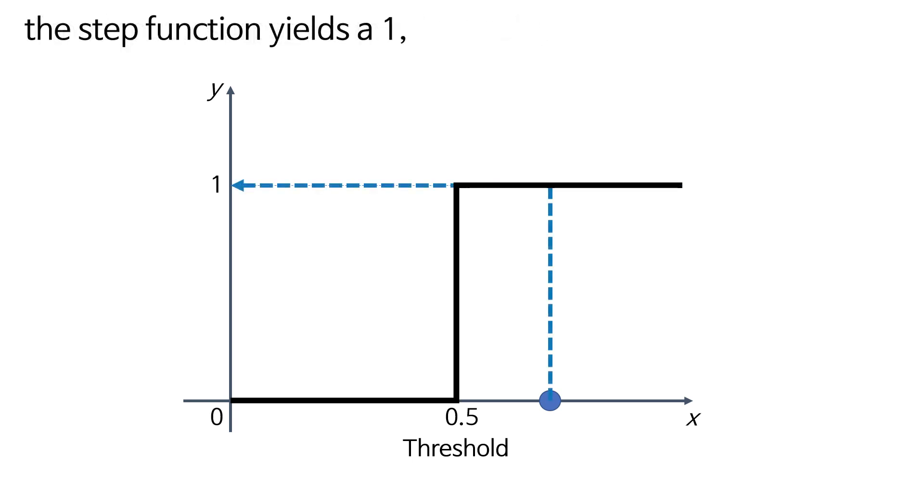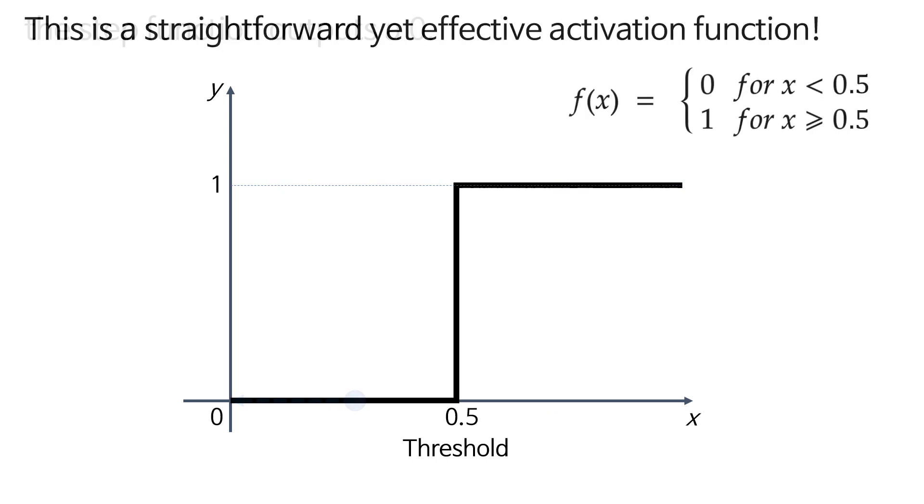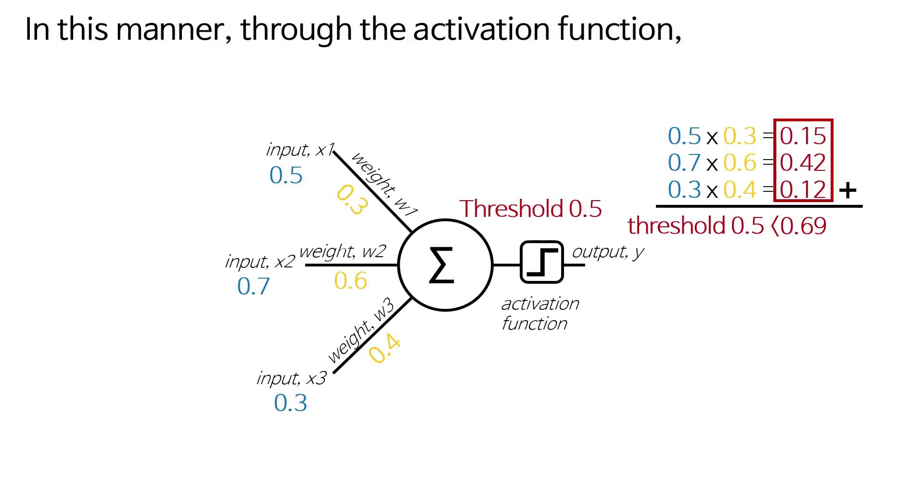and if the input x is below the threshold, the step function outputs a 0. This is a straightforward yet effective activation function. In this manner, through the activation function, the output value will be 1.